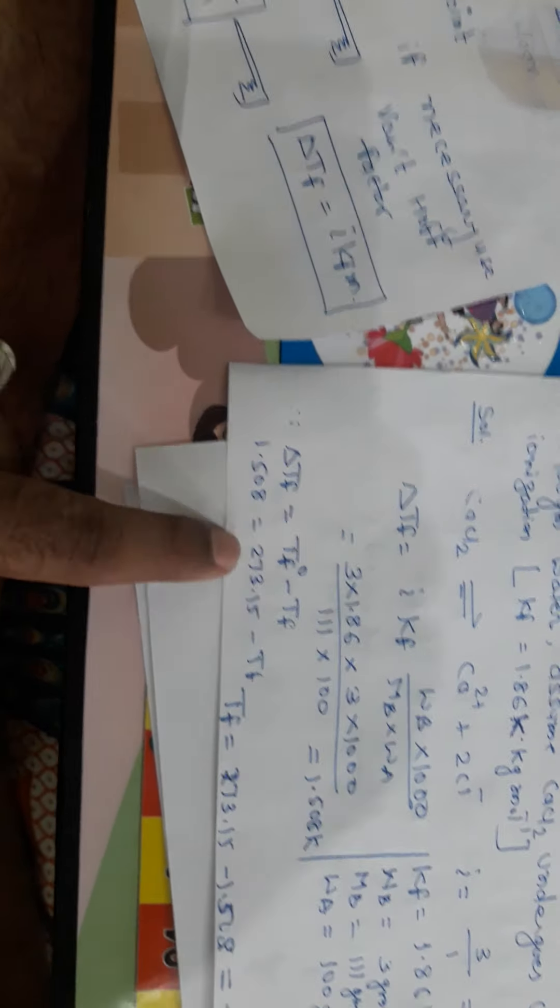first we calculate the I by using the formula total number of the moles after the dissociation or association upon total number of the moles before the dissociation or association. Then go for the normal formula. ΔTf is equal to I, Kf, M. M is equal to Wb into 1000 upon Mb upon Wa. Just put the value and find out the answer.